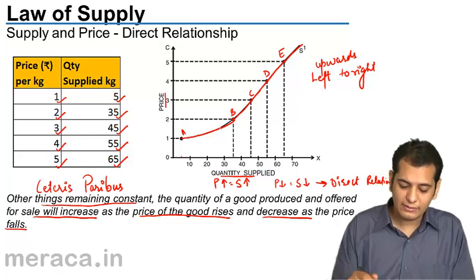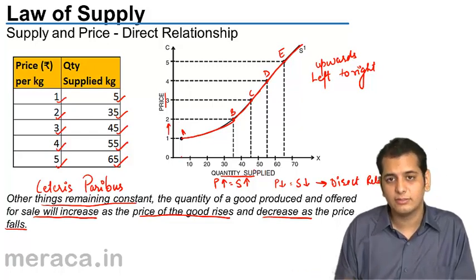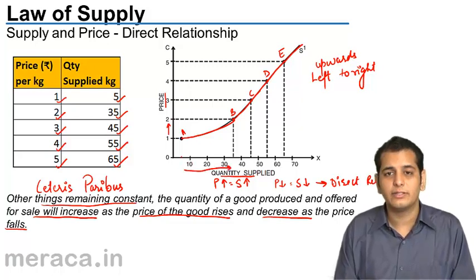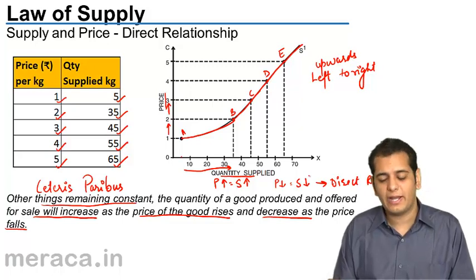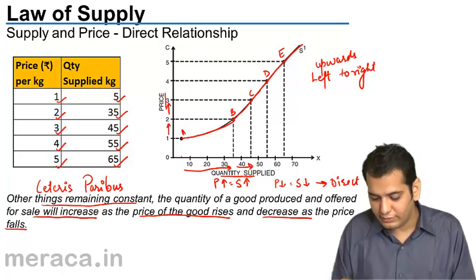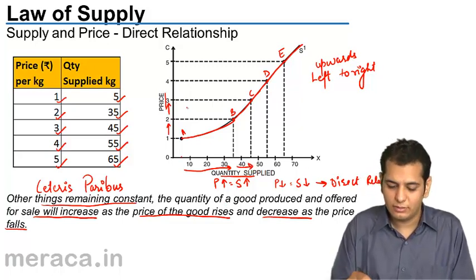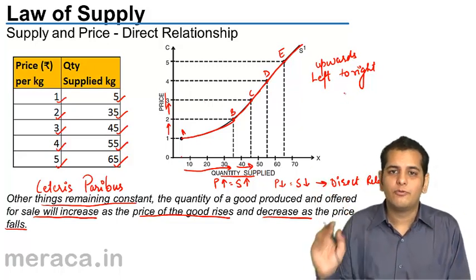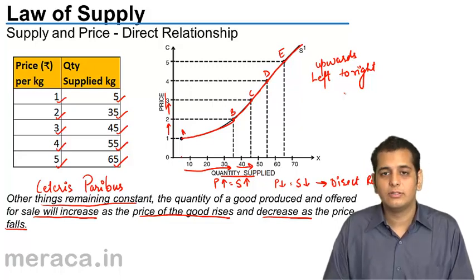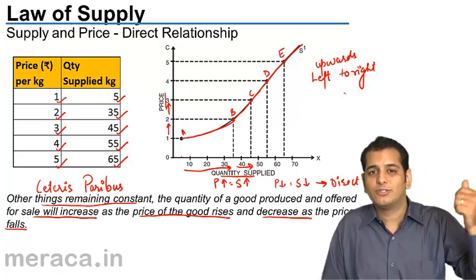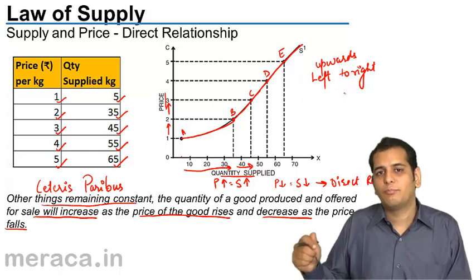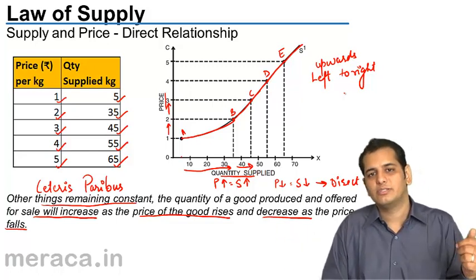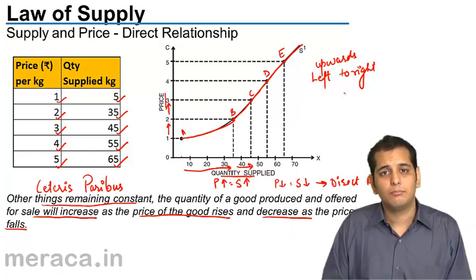Now let's understand why the supply curve has a positive slope. As the price is increasing, the quantity supplied is also increasing at every level. Where there is a positive change in price, there is a positive change in supply. So we say the supply curve has a positive slope.